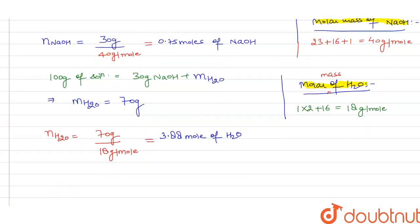Now we can find the mole fraction of solute, NaOH. We have calculated the mole of NaOH as 0.75 mole and mole of water as 3.88 mole.